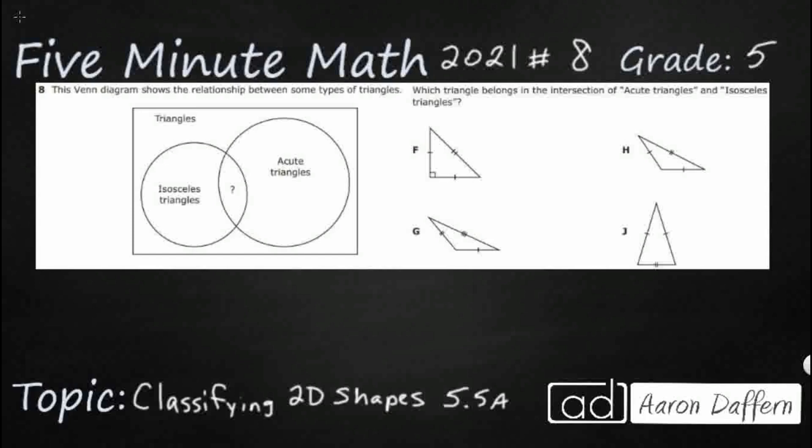So we are looking here at a Venn diagram and we see a little bit of an overlap and that's really what we are looking at here. See this outer box is all triangles. So we are trying to find this intersection right here between isosceles triangles and acute triangles.